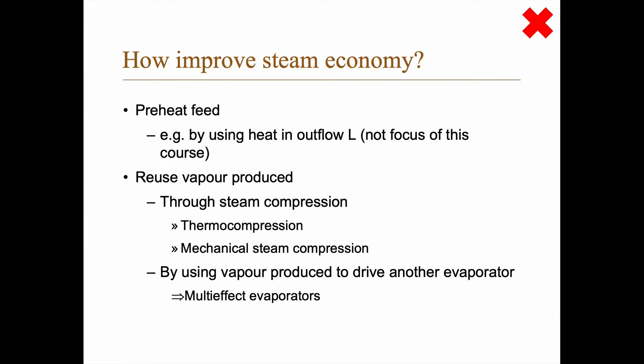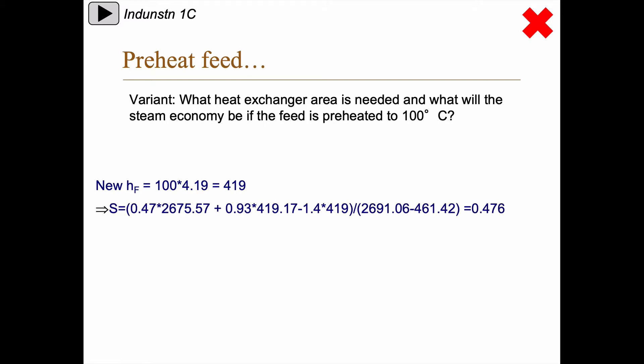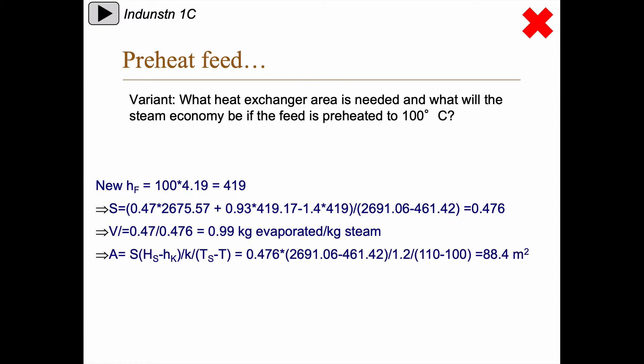Let's look at the preheating of the feed. We take the same example as before and see what happens with the steam economy if the feed is preheated to 100 degrees centigrade. What is new now is that we have a new enthalpy of the feed, which is 100 times 4.19, so 419, rather than our old 159. Putting that into our equation, V divided by S becomes 0.99 kg evaporated per kilogram of steam — that's way better. The required area also becomes different, so we get a better steam economy and a smaller required area.